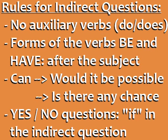Let's review the rules for indirect questions. Indirect questions have no auxiliary verbs, like do, does, or did. In indirect questions, forms of the verbs 'be' and 'have' come after the subject. For questions beginning with the word 'can,' we change it to 'would it be possible' or 'is there any chance' in the indirect question.